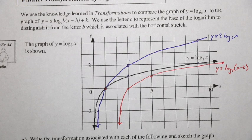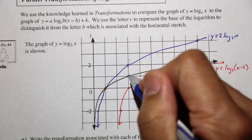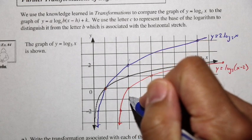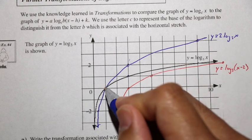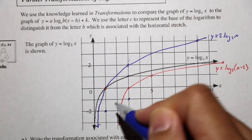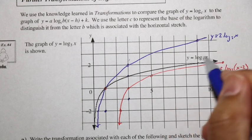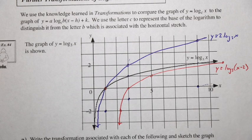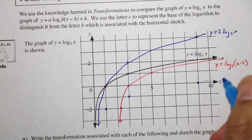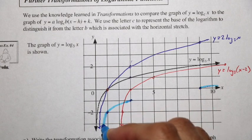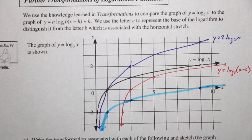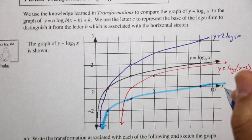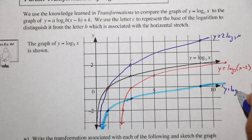For the third one, 2 units down means from the original, each point comes down 2 units. The point at y equals 2 will now be at y equals 0. Using a highlighter to draw this gives us y equals log base 3 of x minus 2 (the vertical shift version).